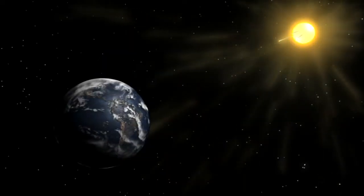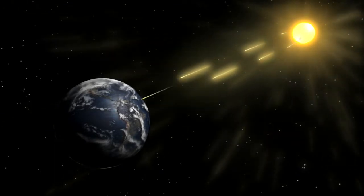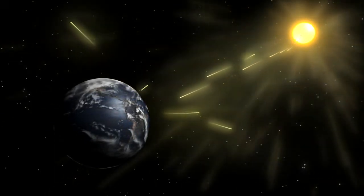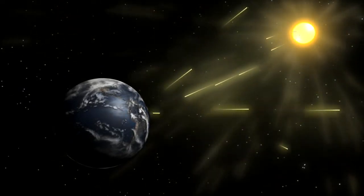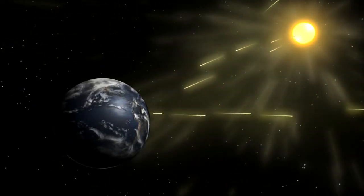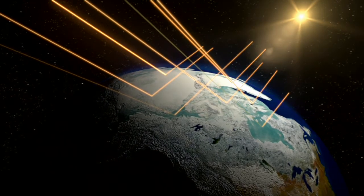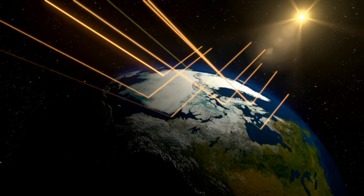A second piece of the temperature puzzle is our planet's brightness. All other things being equal, a brighter, more reflective planet bounces more energy back to space. Some of the brightest, most reflective areas of our planet are those covered with ice. NASA imagery shows those areas shrinking, especially in the Arctic.